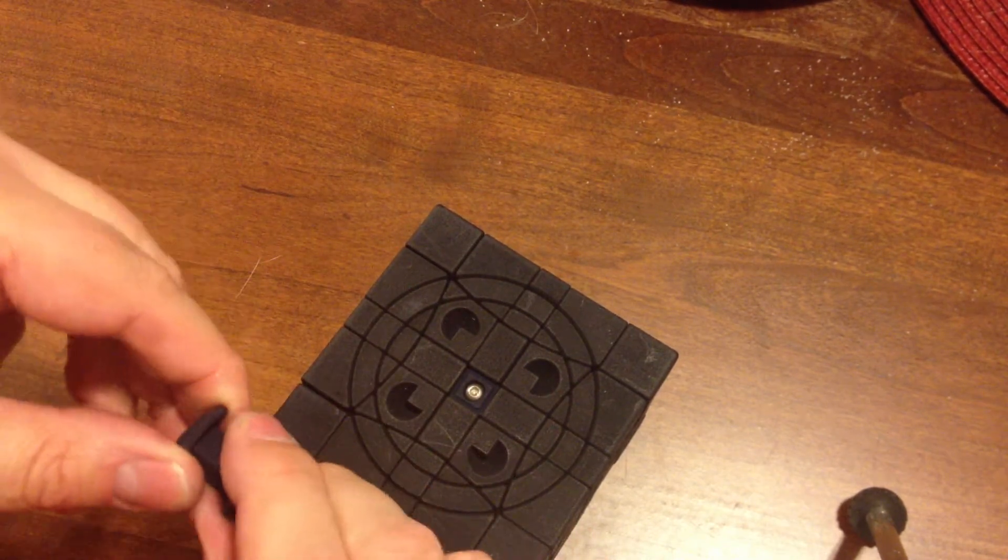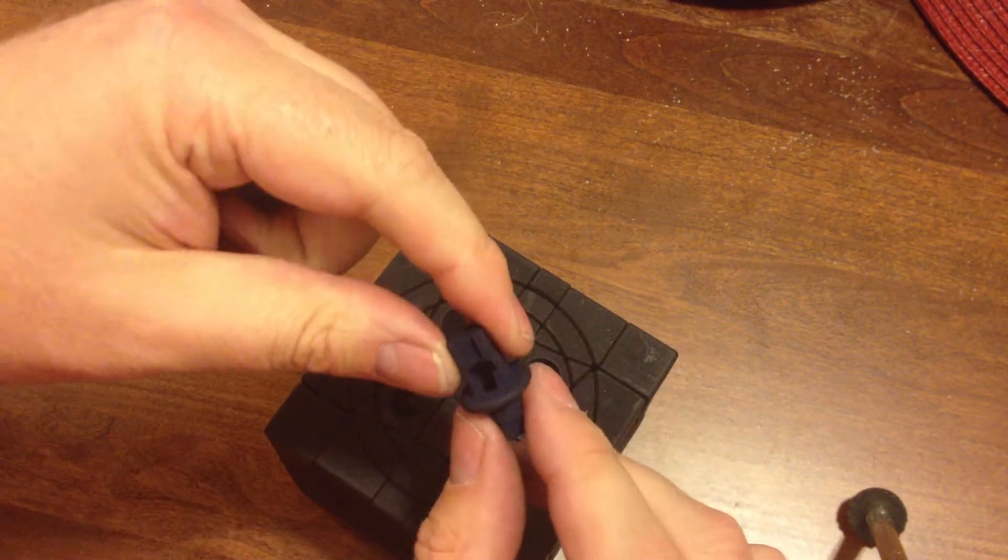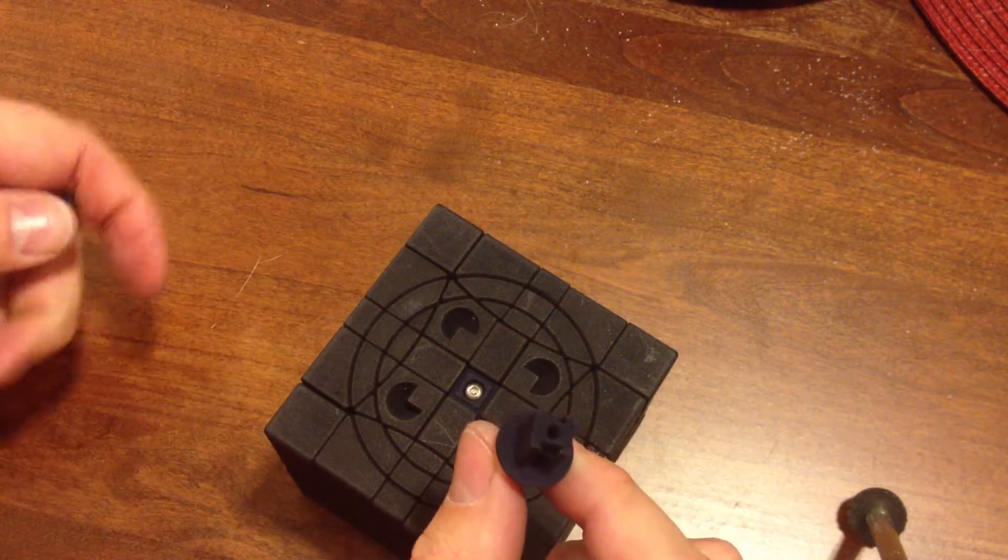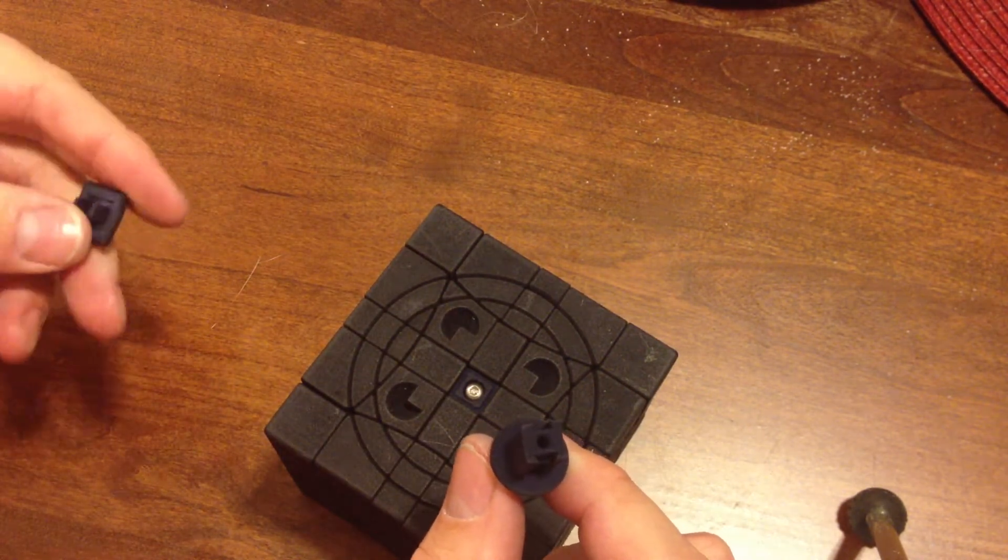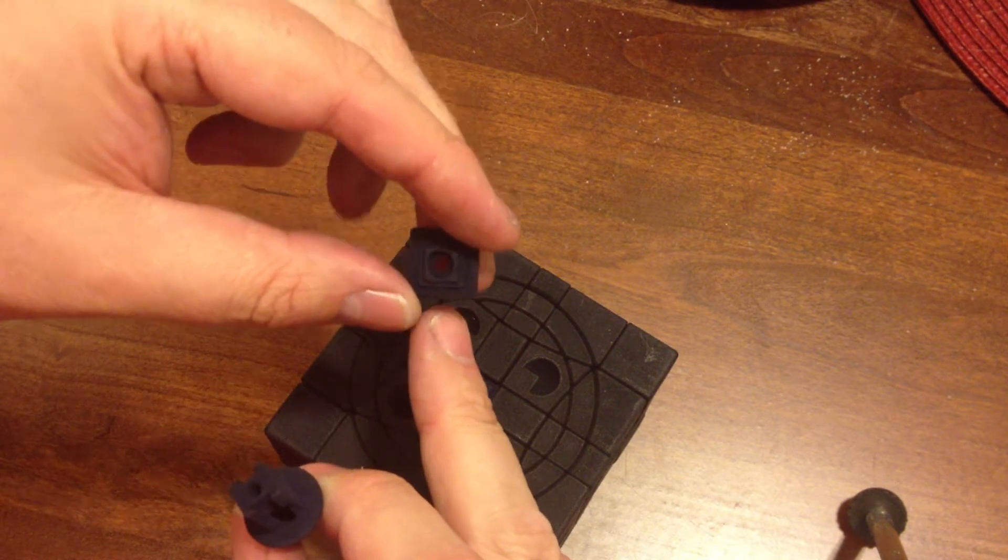I have since gone ahead and redesigned the pieces. This is what the new 3x3 face center looks like. It's got notches there on the top for a tongue and groove connection. This is the 5x5 face center.